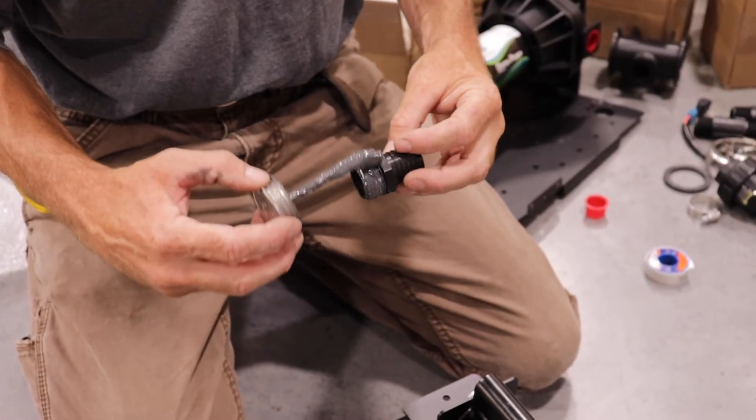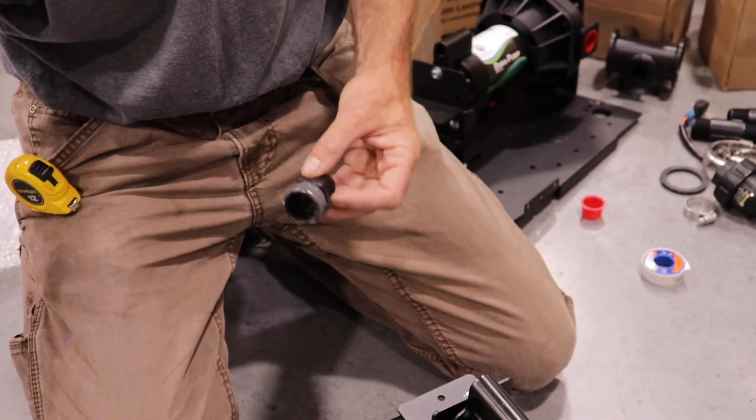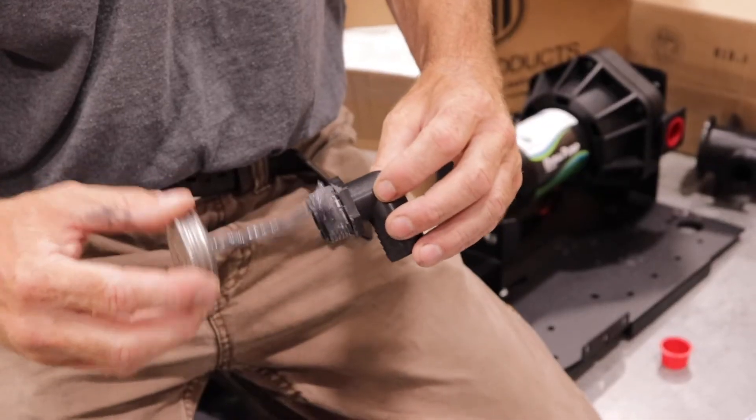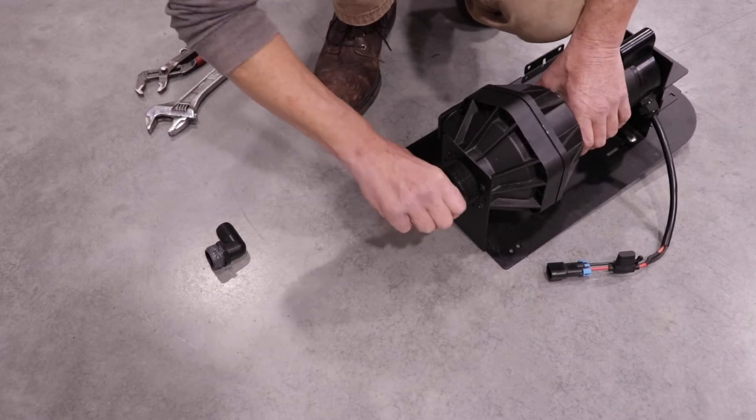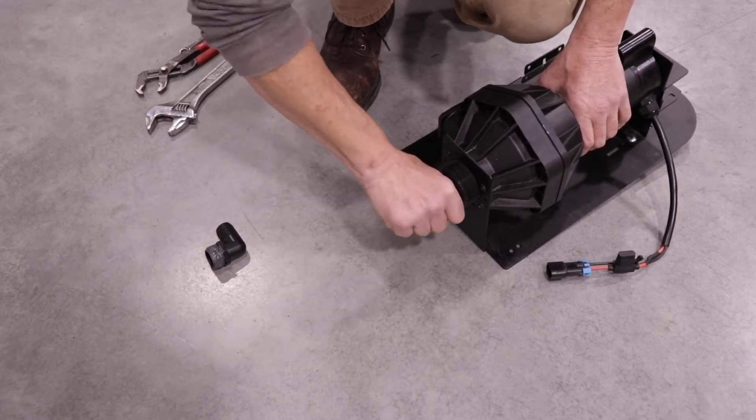Apply thread sealing tape or thread compound to the male threads of all pipe fittings. Tighten fittings until hand tight, then an additional half to three-quarter turn.